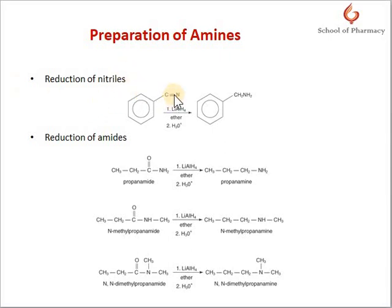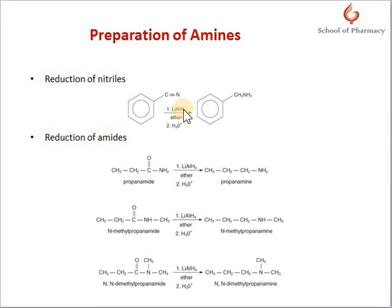Reduction of nitriles: nitriles can be reduced by lithium aluminium hydride to give the primary amine. This reduction of the cyanide group can also be carried out by catalytic hydrogenation with hydrogen in the presence of a catalyst, or by sodium and alcohol — when sodium and alcohol are used, the reaction is known as the Mendius reduction. If we use isocyanide instead of cyanide, reduction of the isocyanide gives the secondary amine.